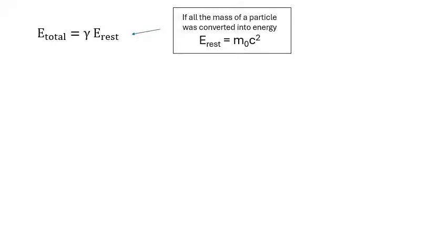The rest energy of a particle is the energy you would get if all the mass was converted into energy. When a particle is moving very fast, we have its total energy equals - there it is again, the gamma factor, the Lorentz factor. E total is gamma times e rest.